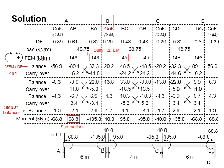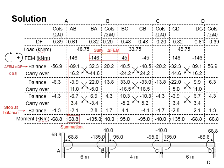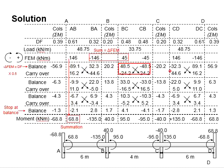At joint B, the difference between the fixed end moments is determined and then distributed according to the distribution factors. In this case, one member takes about 32% of the difference, another takes 20%, and the third takes about 48%. Next, the moment is distributed to the opposite joint, and after distribution the moment is reduced by half — this is the carry-over. The same process is repeated for the opposite joint, distributing back.